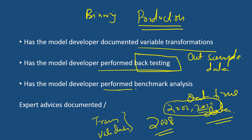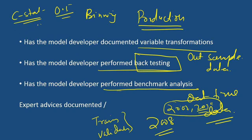The next checklist is whether the model developer performed benchmark analysis. Every model has some benchmark statistics against which it should be compared. For example, the C-statistic in an application scorecard should be greater than 0.5 — if it is less, the model is totally wrong. If your existing model has a C-statistic of 0.75, the new model should have a C-statistic greater than 0.75. There are several performance analyses that should be done and well documented.